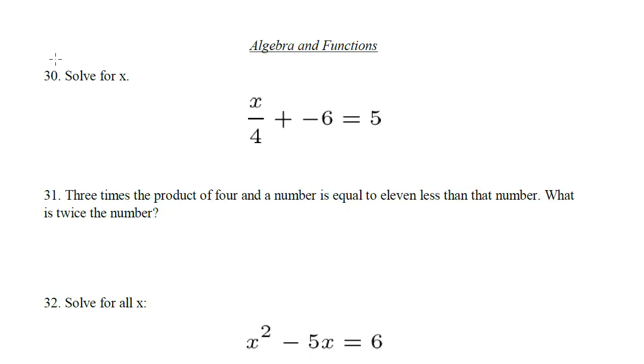Now we're moving into the algebra section of the test, and this is going to be numbers 30 to 40. Number 30, solve for x: x over 4 plus negative 6 equals 5.